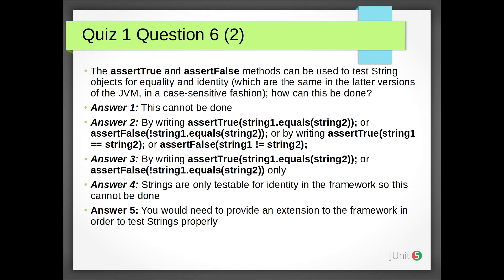Quiz 1 Question 6: The assertTrue and assertFalse methods can be used to test String objects for equality and identity, which are the same in the latter versions of the JVM, in a case-sensitive fashion. How can this be done? Answer 1: This cannot be done. Answer 2: By writing assertTrue(string1.equals(string2)) or assertFalse(!string1.equals(string2)), or by writing assertTrue(string1.equals(string2)) or assertFalse(string1 != string2). Answer 3: By writing assertTrue(string1.equals(string2)) or assertFalse(!string1.equals(string2)) only.